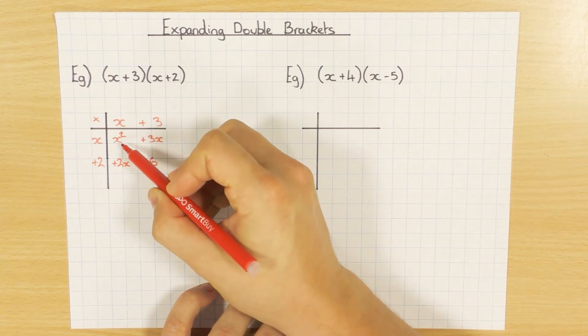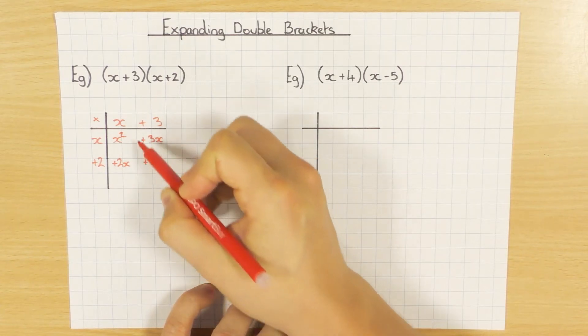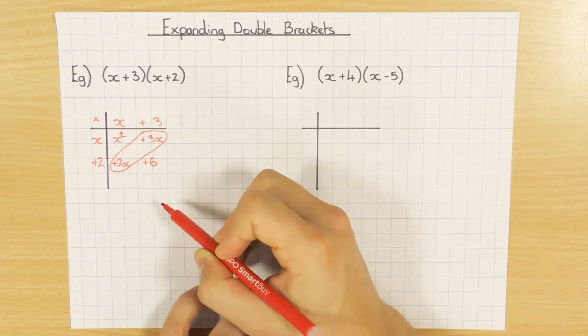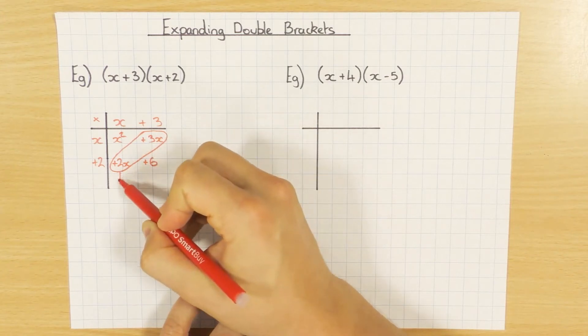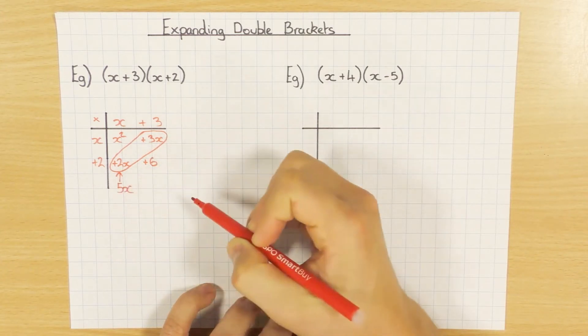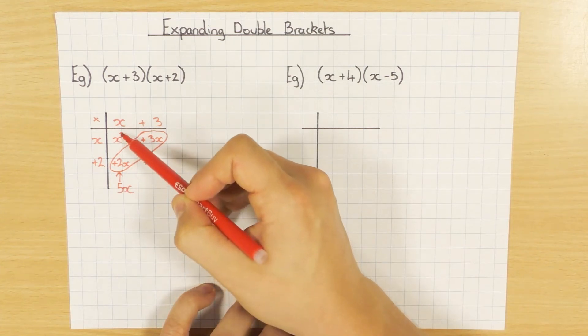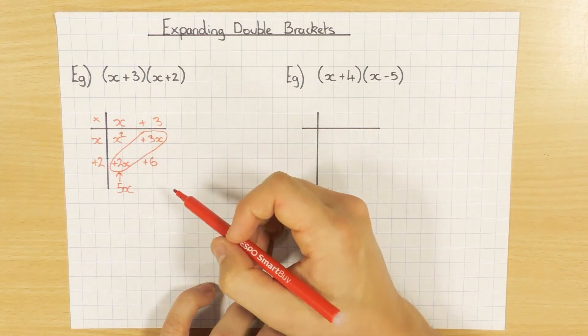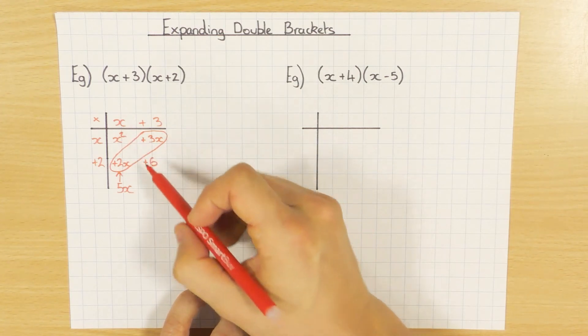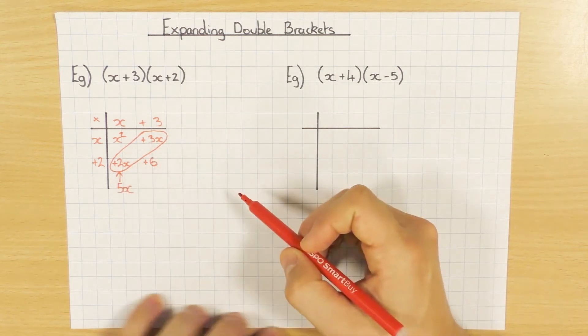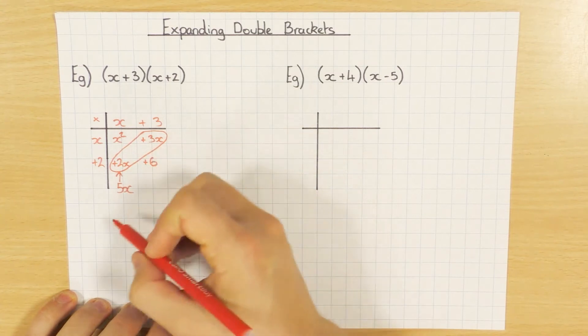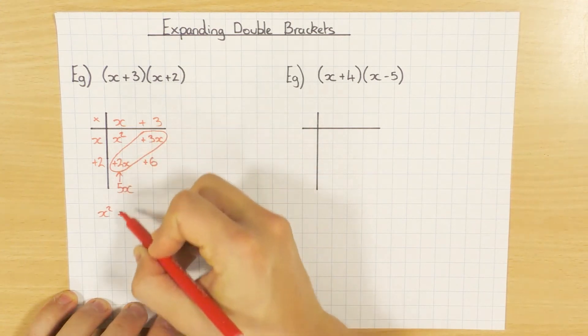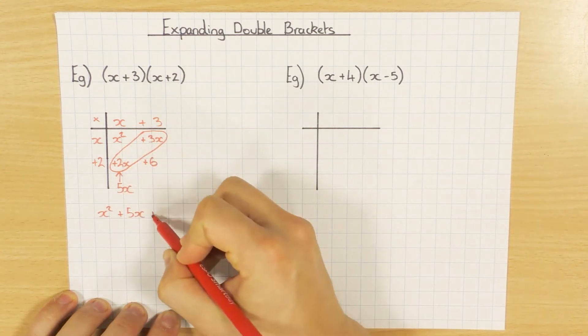Okay, once you've multiplied everything, you have a look and see what we can simplify. So I've got 5x. I can't add the x squared and the x because the powers are different. Remember when we collect like terms, if the powers are different they are not like terms and therefore you cannot simplify them. So the only thing I can simplify here are the x's. So once you've simplified those, you can then write your answer out.